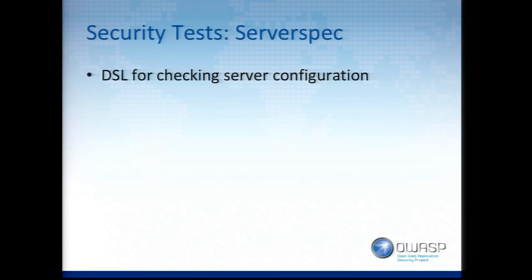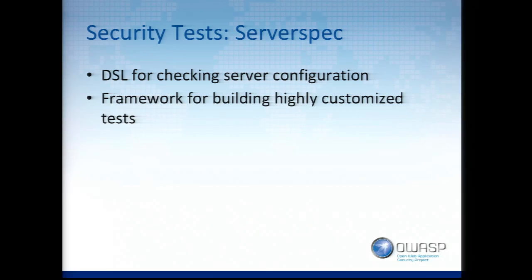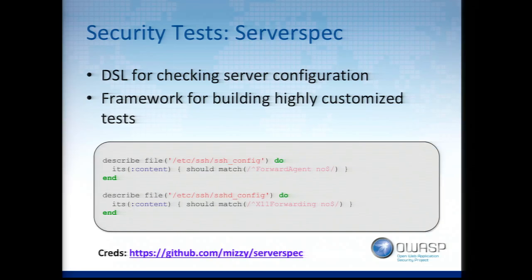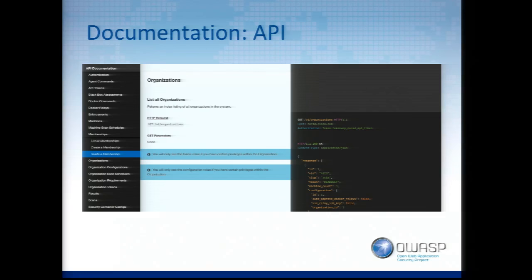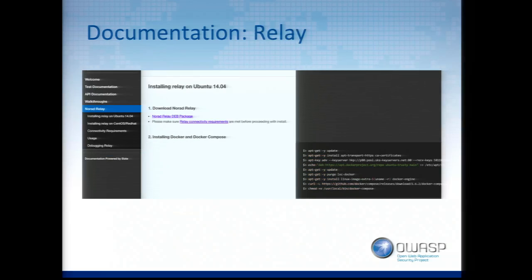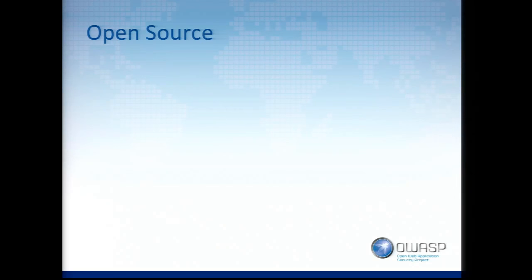ServerSpec is an open source tool — a domain-specific language for writing customized tests to verify server configuration. Here are simple examples: checking that an SSH config is set up in a certain way, running authenticated on the box to make sure configuration is correct. We also have all API documentation and instructions on installing the relay. All test content documentation is auto-generated.